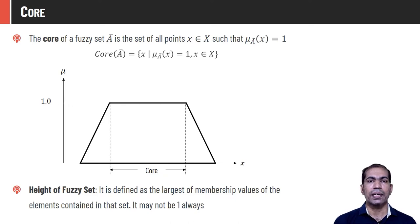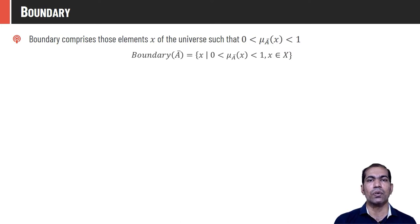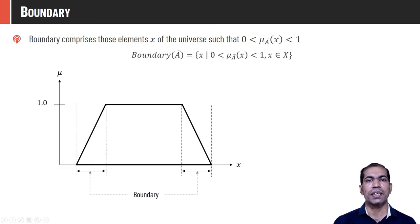Boundary of a fuzzy set is defined by the collection of all elements whose membership value is strictly between 0 and 1: boundary(Ā) = {x | 0 < μ_Ā(x) < 1, x ∈ X}. Elements with membership value 0 or exactly 1 are not part of the boundary. Graphically, the boundary lies in the slope or decreasing membership region — elements in the core and elements outside the trapezoidal function are not part of the boundary.